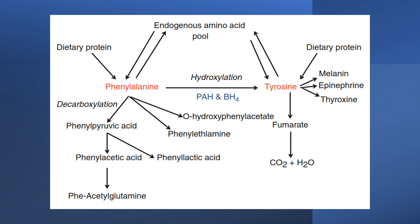The toxic metabolite in phenylketonuria is phenylalanine. The management of this case is mainly through restriction of phenylalanine in the diet — the diet is described as phenylalanine-restricted diet. We have to minimize the amount of phenylalanine in the diet of this baby, but we should not eliminate phenylalanine totally from the diet because it is essential for the formation of body proteins.